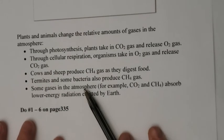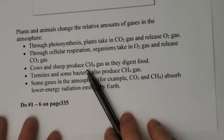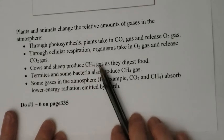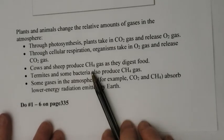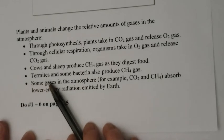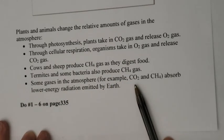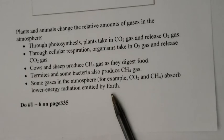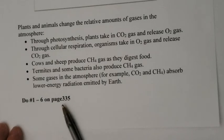Carbon dioxide is a greenhouse gas. Cows and sheep actually produce a tremendous amount of CH4, that's methane gas — a gas they expel from their bodies after eating. They do it to a significantly higher proportion than we do as they digest food, and that actually affects the climate significantly. Termites and some bacteria also produce methane gas. These gases in the atmosphere — carbon dioxide and methane — absorb lower energy radiation emitted by the Earth and hold it in like a blanket. I'd like you to do questions 1 to 6 on page 335.